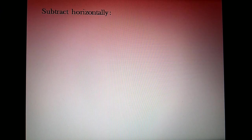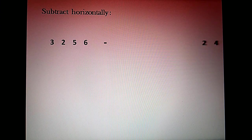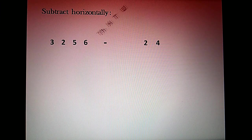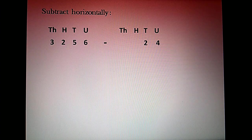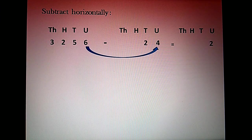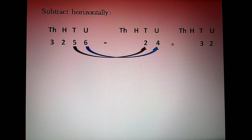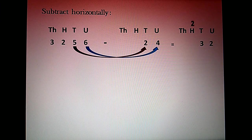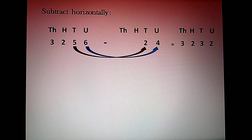We will see one more example — subtract horizontally: 3,256 minus 24. We write the place of each digit: thousands, hundreds, tens, and units, and use arrows to solve the sum. Units place: 6 minus 4 is 2. Tens place: 5 minus 2 is 3. Hundreds place: we have 2 on top, but in the second number the hundreds place is empty, so we assume it is 0. So 2 minus 0 is 2. Thousands place similarly: 3 minus 0 is 3. So the answer is 3,232.